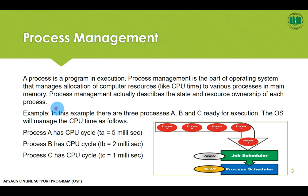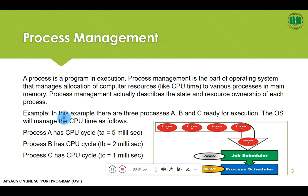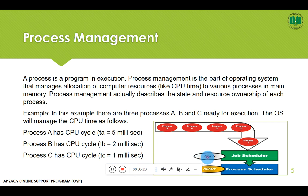Every process has some resources — every process has some data, some stack, some code, and other sections. All these sections should be managed accordingly. In this example, there are three processes A, B, C ready for execution. The OS will manage CPU time as follows. For process A, the CPU has to execute 5ms; for process B, 2ms; and for process C, 1ms to execute these processes.